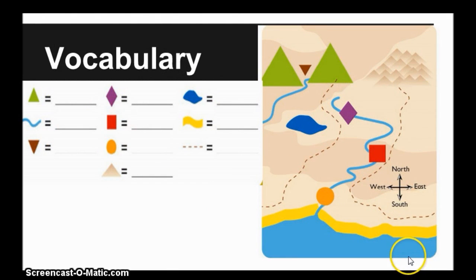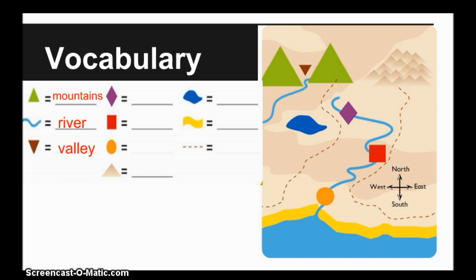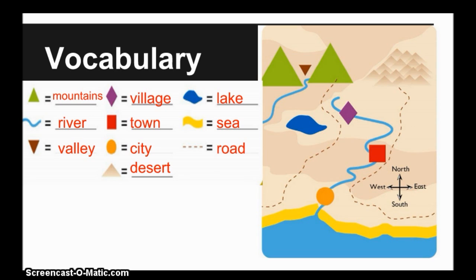This is the same thing that is from the lesson that is coming. The green triangle is mountains. The blue line is river. The brown triangle is valley. The diamond is village. The square is town. The circle is city. The blue triangle is desert. The blue shape is lake. The yellow shape is sea. Where the dotted lines are, those are the roads.